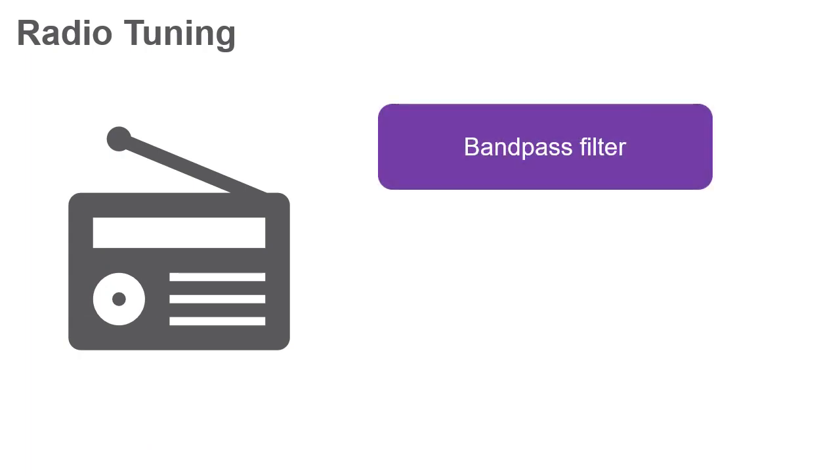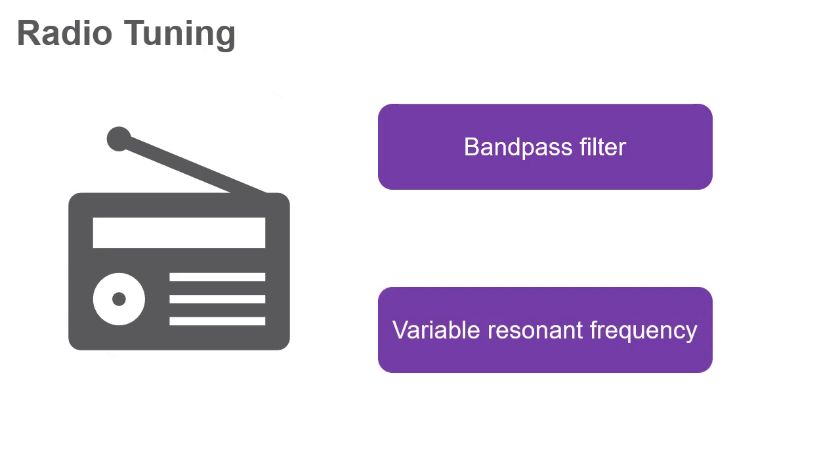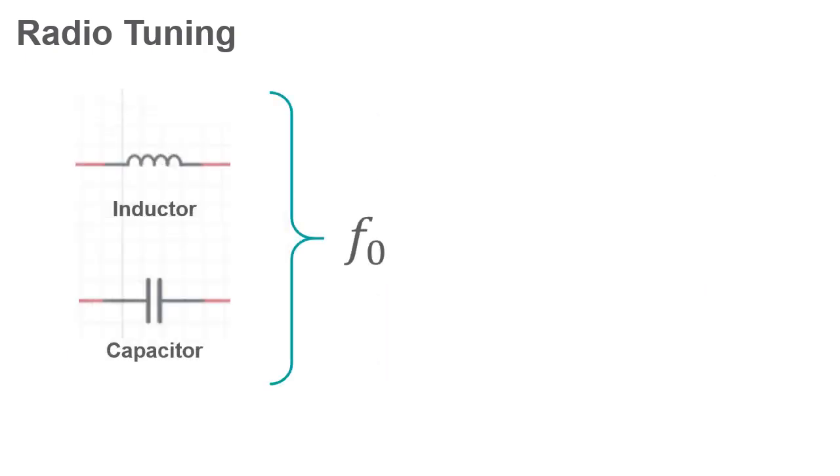In the simplest of radios, the tuning circuit is often a rudimentary bandpass filter composed of a parallel LC or RLC circuit. The important characteristic of such circuits is their variable resonant frequency. The resonant frequency of an RLC tuning circuit is manipulated with either a variable inductor or a variable capacitor.